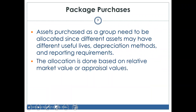What happens if you purchase a piece of land that has a building on it and the building has equipment inside? You've purchased three assets but paid one price — this is known as a package purchase. The question is: how much of the purchase price do you allocate to the equipment, the land, and the building? These are three separate assets on your balance sheet, but you only paid one price.